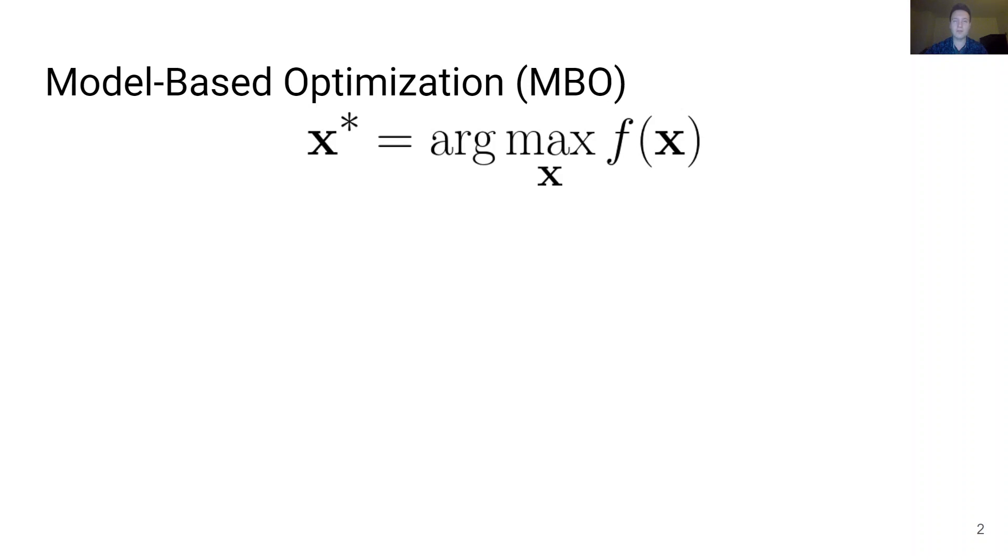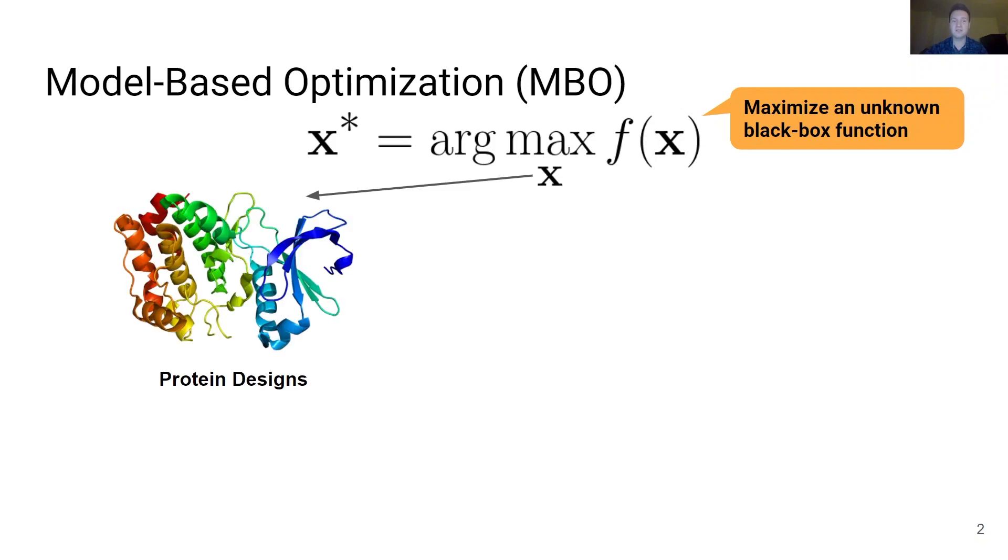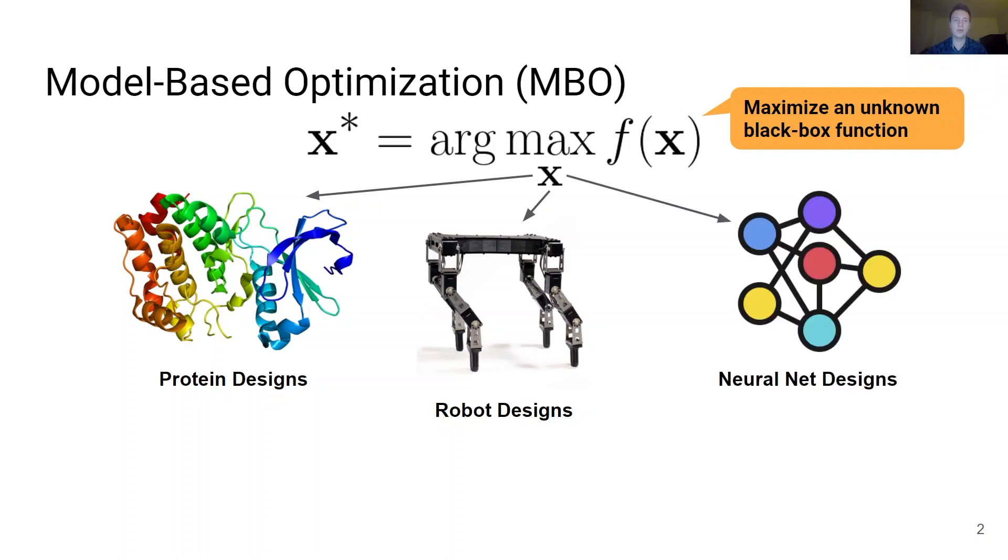The goal of model-based optimization is to find a solution to a maximization problem over a black box function f, which specifies the score of a design variable x. The design x can range from discrete designs like amino acids in proteins to continuous ones like the morphology of a robot and even the weights of a neural network.